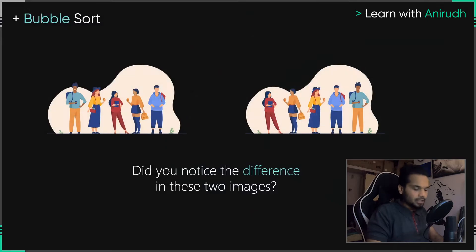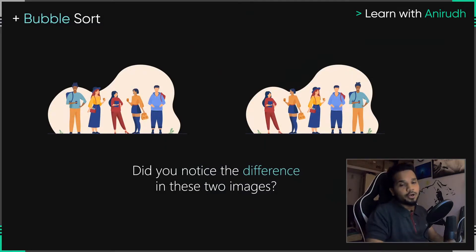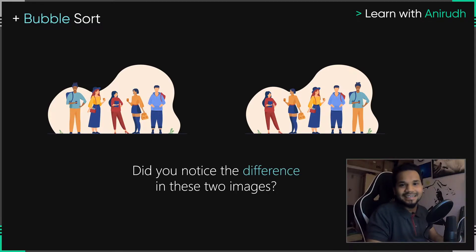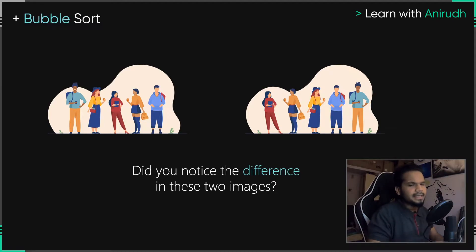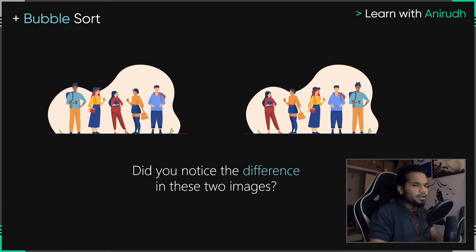Bubble sort is a concept that we actually use in our daily life, even though you may not know it. As always with Learn with Anirudh, let's get started with an example to help you guys relate to this better. Take a look at the images you see on your screen right now. There are two images — even though they seem very similar, there are certain differences. What can you observe? What are the differences that you can find?